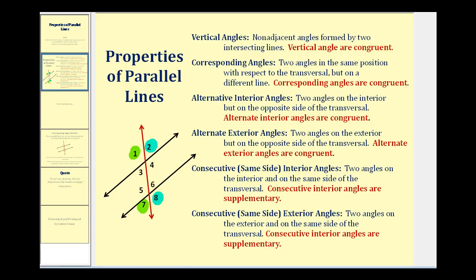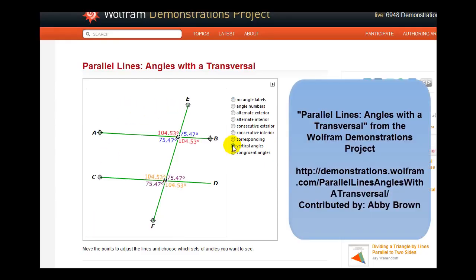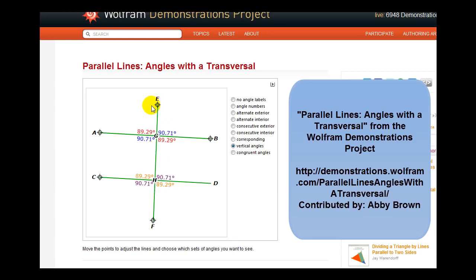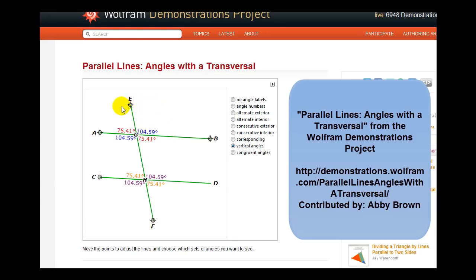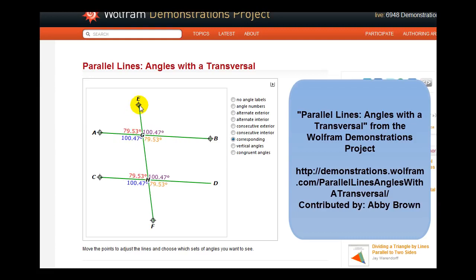Let's take a look at a Wolfram demonstration, just to reinforce this idea. Here we see vertical angles in blue, red, orange, and purple. Notice, regardless of how the transversal cuts the two parallel lines, the angles remain congruent or equal in measure. Now we see the corresponding angles in red, blue, purple, and orange. Notice that the corresponding angles are congruent, regardless of how the transversal intersects the two lines.